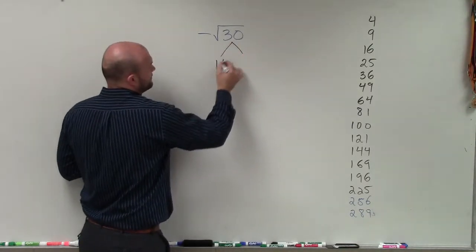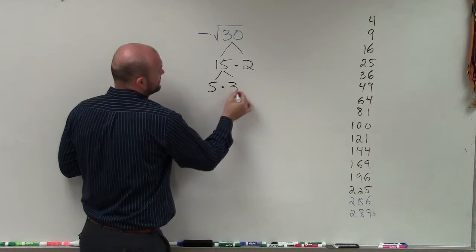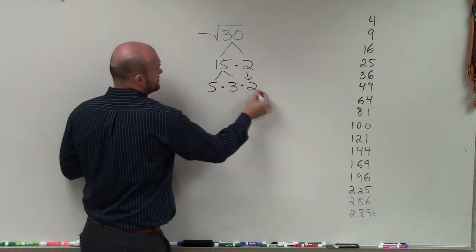So I can say 30 is going to be 15 times 2. Here I can do 5 times 3. And then bring that 2 down, so then it's times 2.